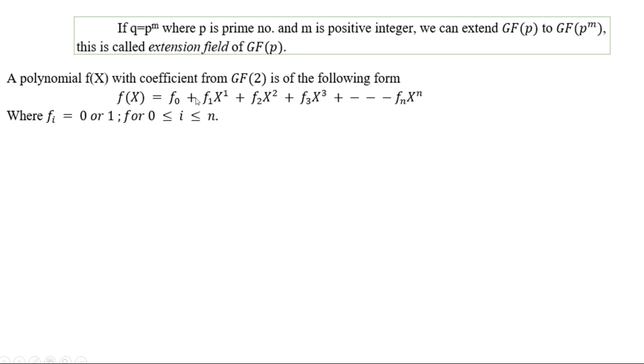You can write a polynomial with coefficient GF of 2: F of X equals F0 plus F1 X plus F2 X square plus F3 X cube, and so on, Fn X to the n. It will be the polynomial form when you use the coefficient of GF of 2, where Fi equals 0 or 1 for 0 ≤ i ≤ n.